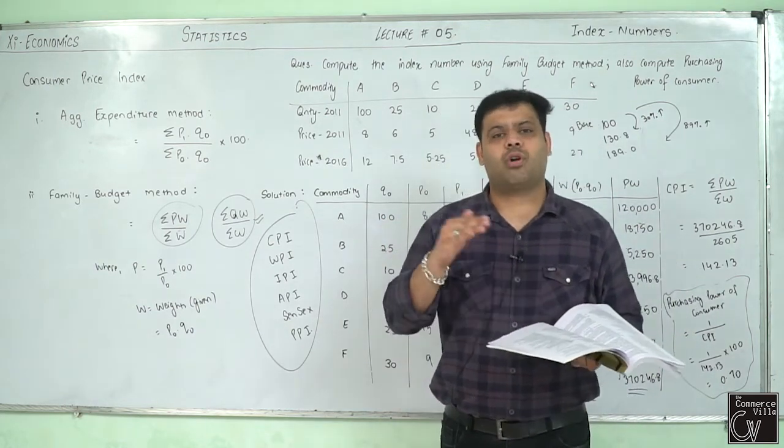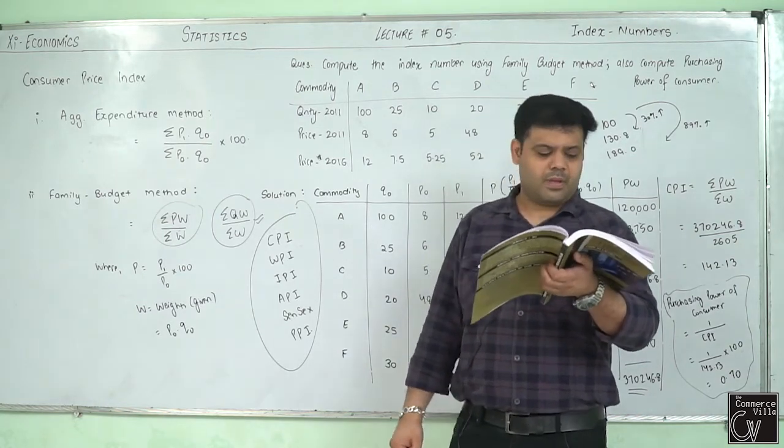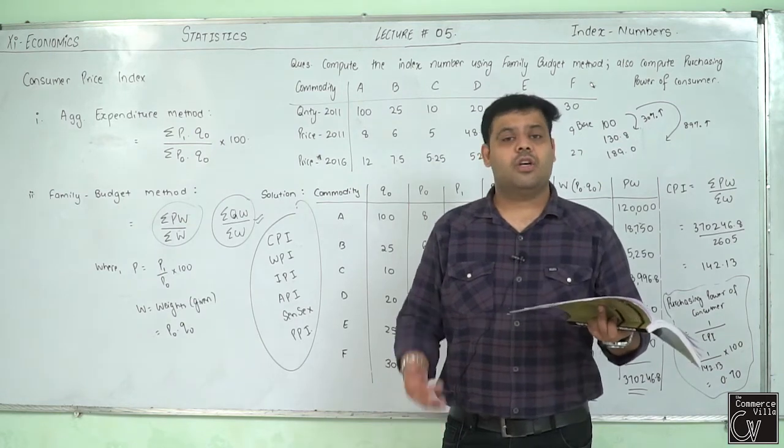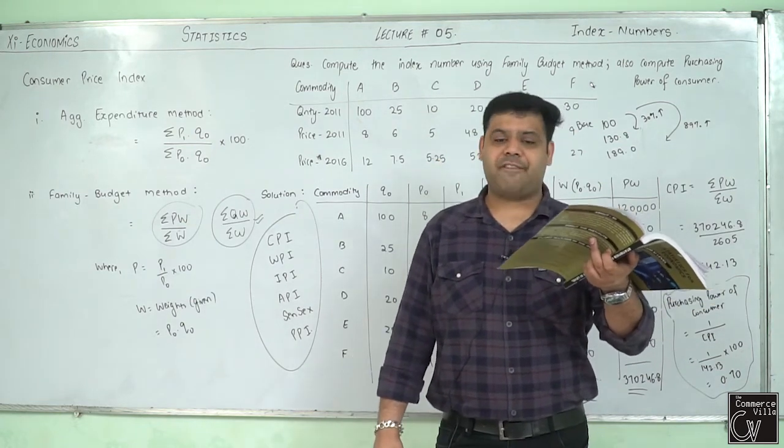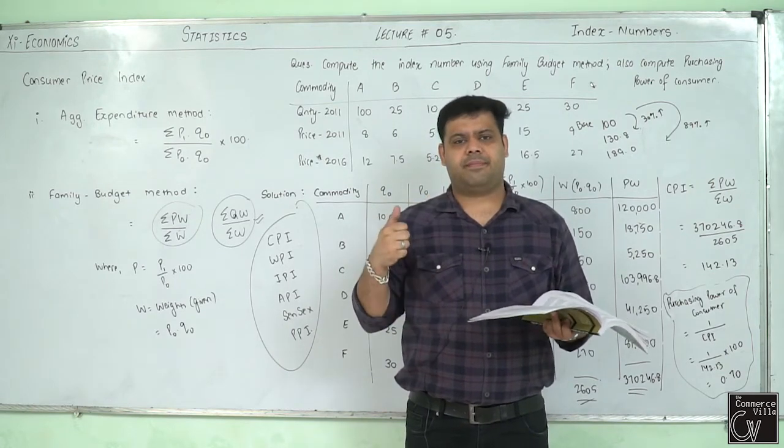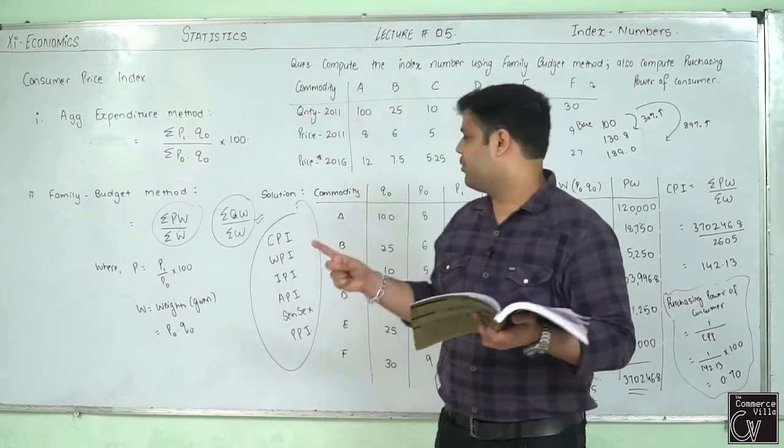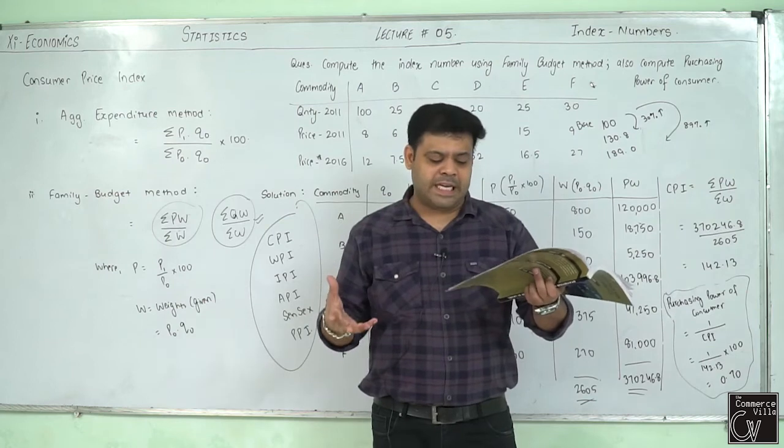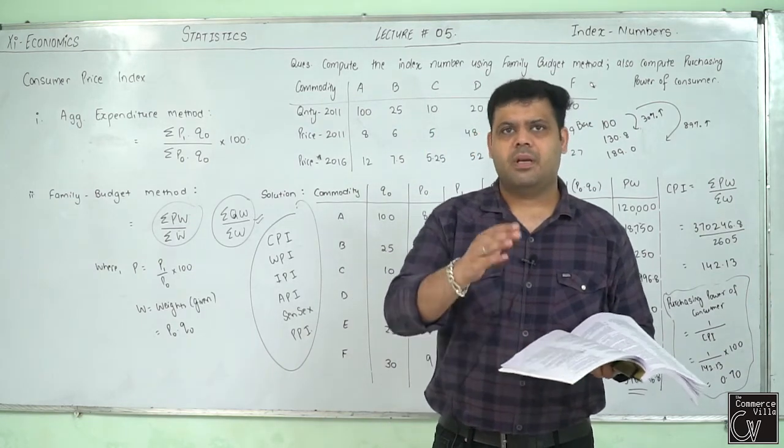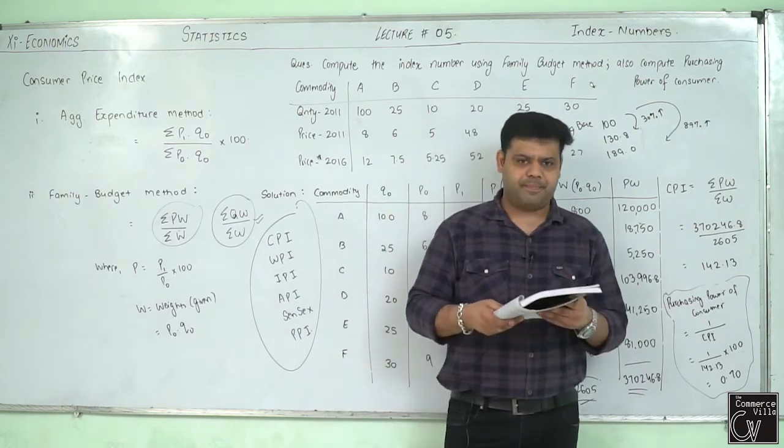And the last, difficulties in the construction of index number. The construction of index number involves several problems such as the selection of base year - which year to select? Selection of commodities, selection of average, selection of source of data, etc. So limited applicability - we make index numbers for specific purpose. International comparison not possible due to change in the currency. Limited coverage - commodities are very less. And many other problems like calculations, mean, from where is data collected, from where is base year selected, etc. So these are the limitations of index number. Take one minute, have a look on that. Read all four points carefully, star mark the limitations.